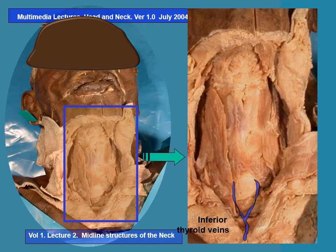To recapitulate this list: symphysis menti, mylohyoid raphe, hyoid bone, the median thyrohyoid ligament, the laryngeal prominence, the angle of the thyroid cartilage, the cricothyroid ligament, further down the cricoid cartilage, then the cricotracheal junction, the first ring of the trachea, then overlying the next three rings the isthmus of the thyroid gland, and lower down, from the fifth tracheal ring onwards the next few rings are visible. Then the inferior thyroid vein and the jugular arch. These are the structures.